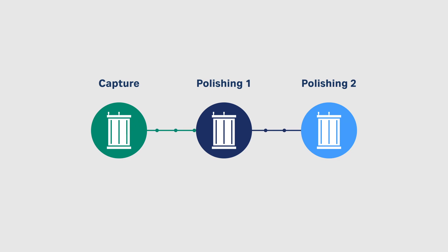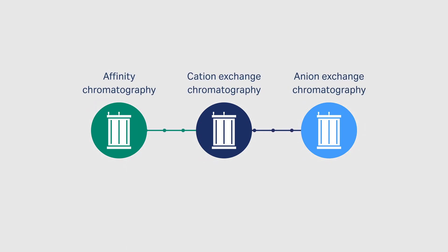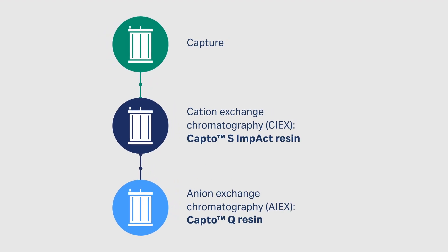Remove as many impurities as possible in the capture step, and then further purify with polishing steps. A MAB purification platform using ion exchange chromatography during polishing steps is also well-suited for some antibody variants. However, if you don't achieve the required purity and yield, try a different chromatography technique.